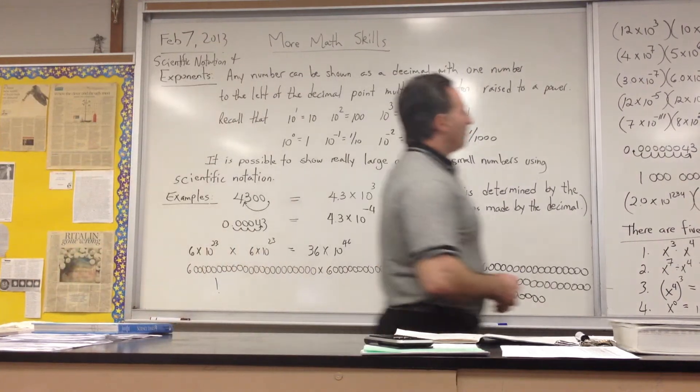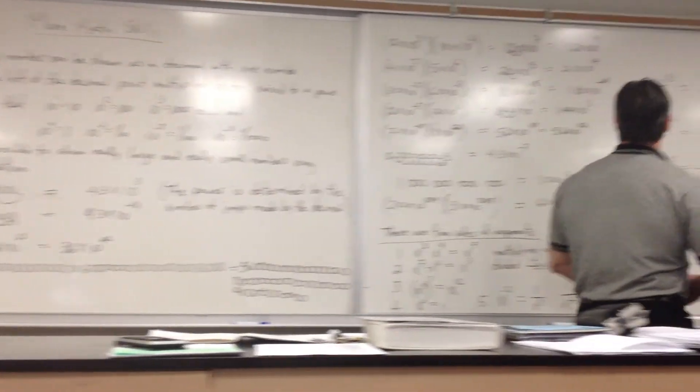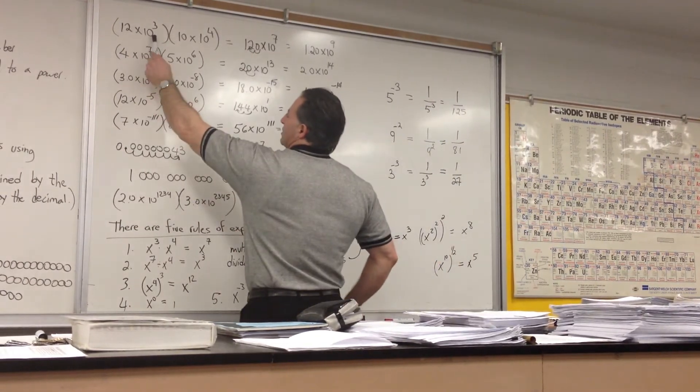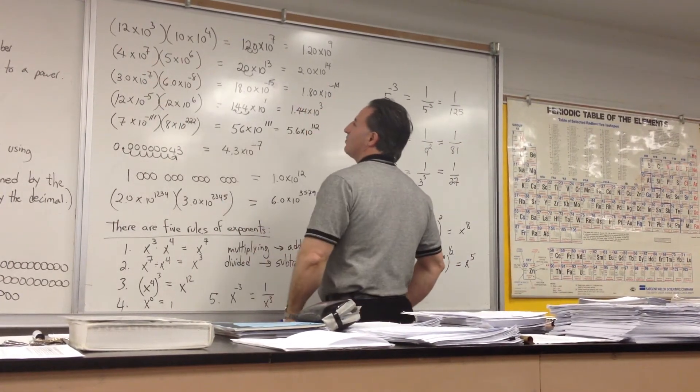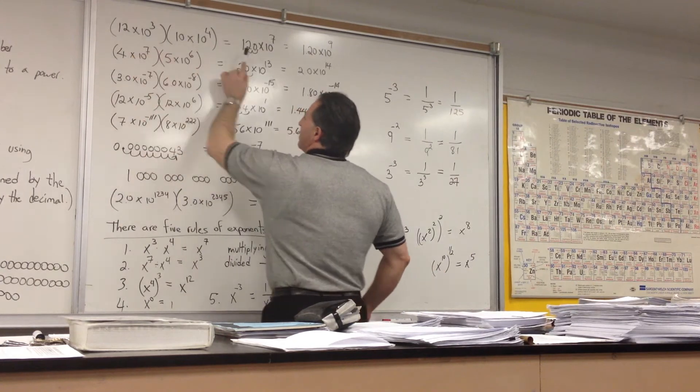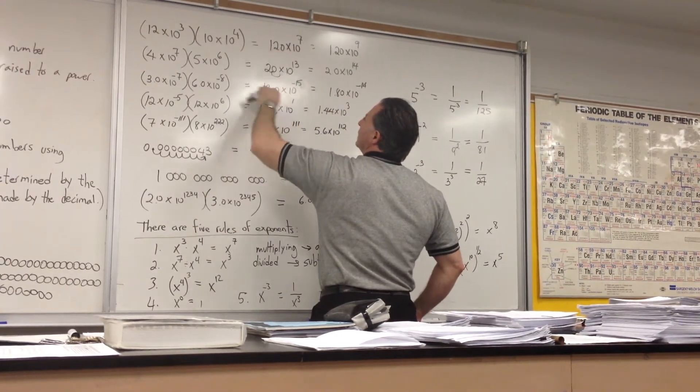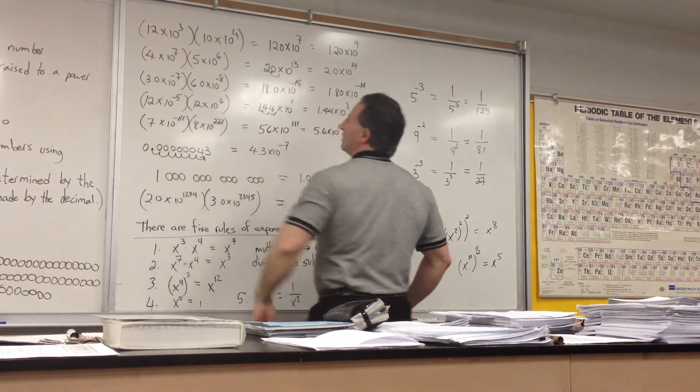We'll go to the next board. We have a couple of examples. If I multiply 12 times 10 to the 3 by 10 times 10 to the 4, I would get 12 times 10, which is 120. And then I add these exponents, so we get 10 to the 7.